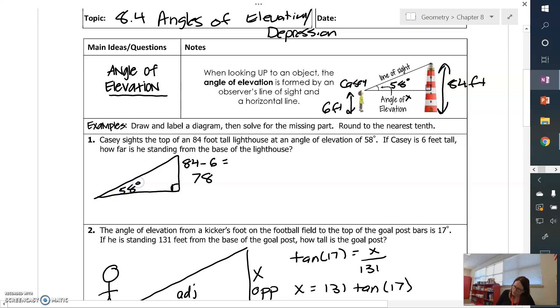This is 58 degrees. And this is what I'm looking for. So I have my triangle. I'm going to label the sides. This is opposite. This is adjacent. And so I'm going to select tangent for my trig ratio. So tangent of 58 is going to equal 78 over X.